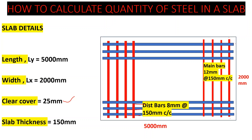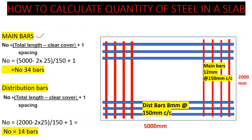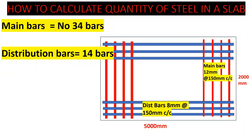The number of main bars is calculated as: (total length minus 2 times clear cover) divided by spacing, plus one. Our total length is 5000 millimeters, clear cover is 25 millimeters, and spacing is 150 millimeters. That gives us 34 bars. For the distribution bars, using the same formula with the total length of 2000 millimeters minus 2 times 25, divided by 150, plus one, we get 14 bars.